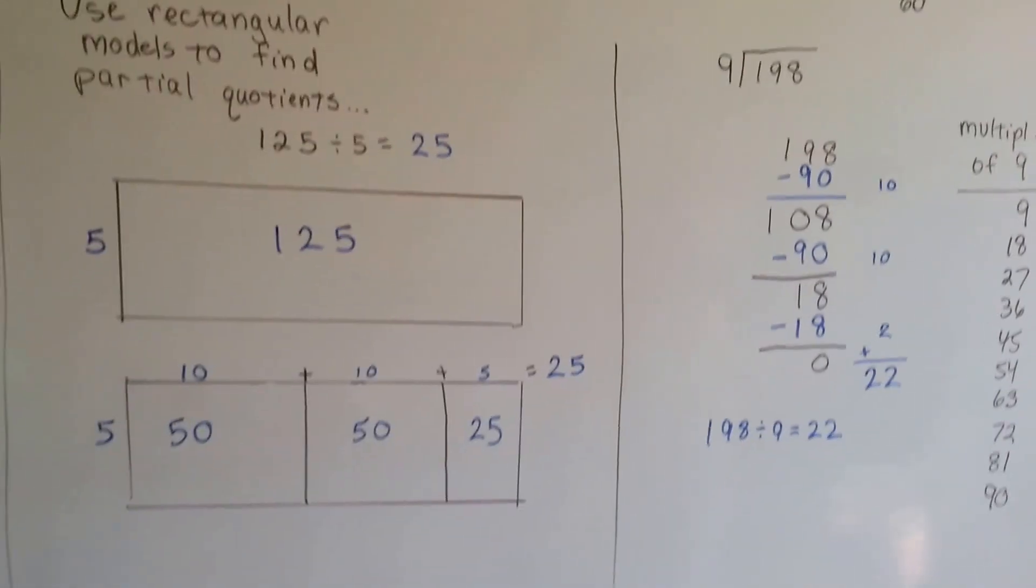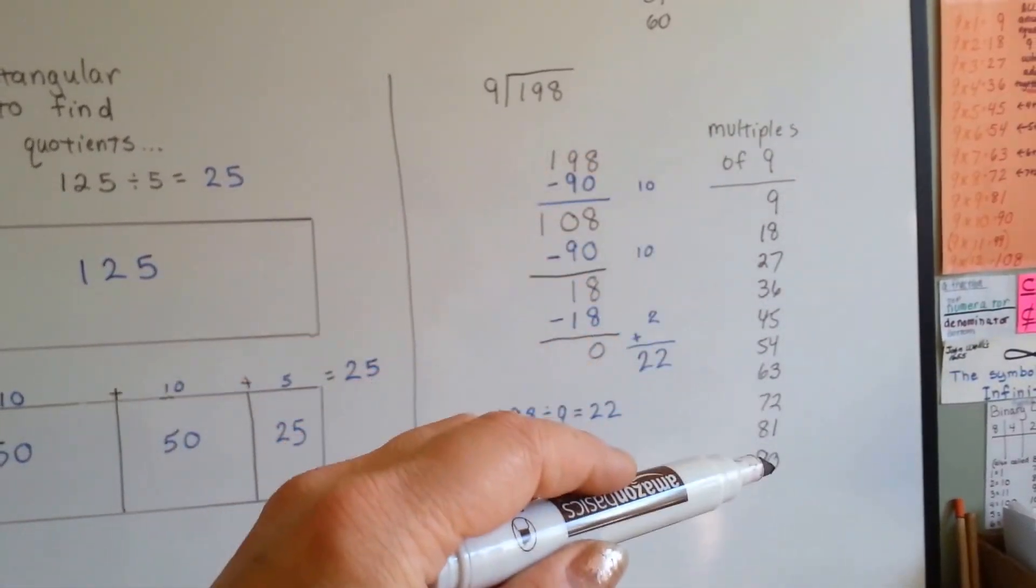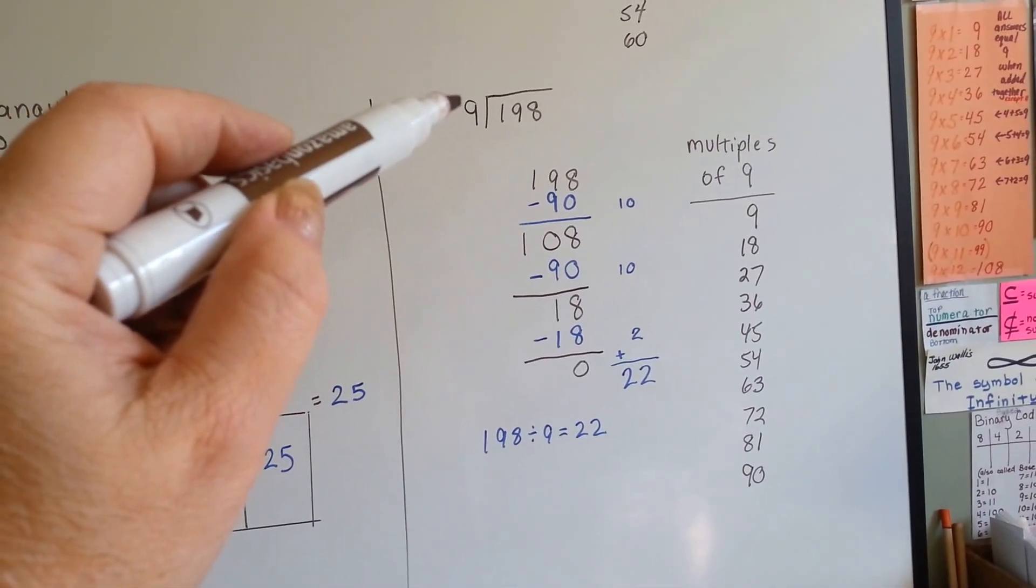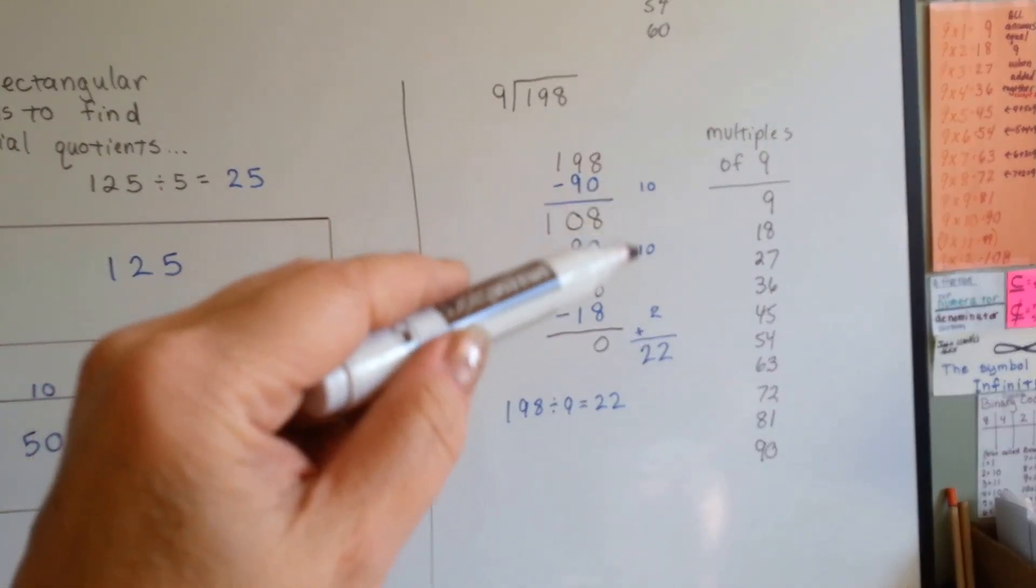You can do this, can't you? Okay. It's just subtracting the multiples. So, write your list of multiples of your divisor. And then just keep subtracting them. And keep track on the side.